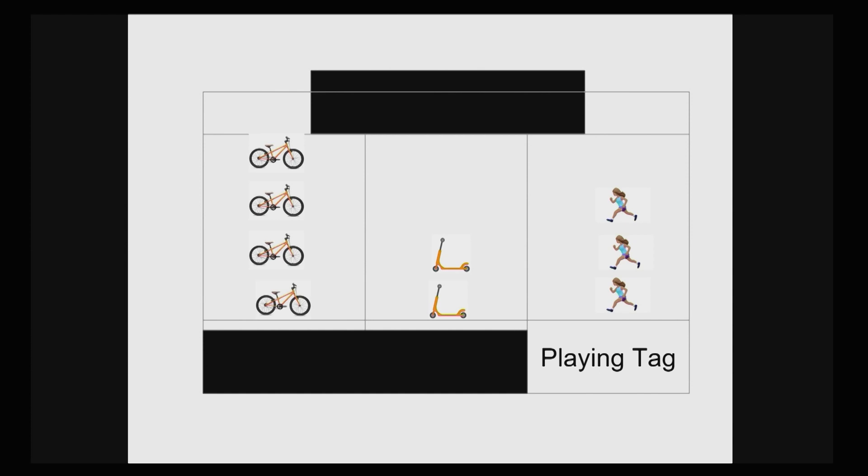Take a look at this graph. What do you notice? I notice some bicycles. I notice it looks like people. I notice four bicycles, two scooters, and three runners.